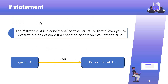Without wasting time, let's start. In this slide you can see what is 'if'. The if statement is a conditional control statement that allows you to execute a block of code if a specified condition evaluates to true. For example, if someone says: if the age of a person is greater than 18, then he is an adult — this is nothing but a conditional control statement.